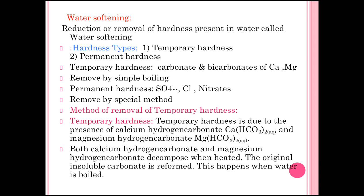This type of hardness is divided into two subtypes: first is temporary hardness and second is permanent hardness. Temporary hardness is alternatively called carbonate or bicarbonate type of hardness. Permanent hardness is hardness of water in which sulfates, chlorides, and nitrates are present.